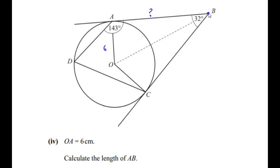In our example, B is the external point through which two tangents BA and BC are drawn. Using the two-tangent theorem, the angle between the two tangents is divided into two equal halves, so angle ABO becomes 32 divided by 2, which is 16 degrees, and angle CBO also becomes 16 degrees. By the radius-tangent theorem, OA is the radius and AB is the tangent, so angle OAB is 90 degrees. Triangle OAB is therefore a right-angled triangle.